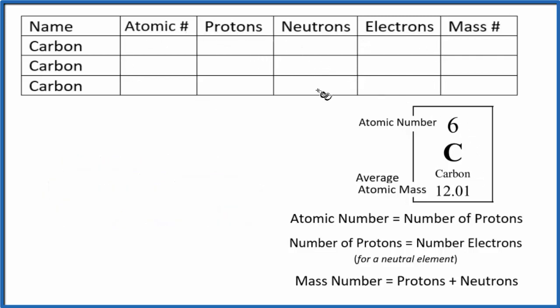So carbon has three primary isotopes. We'll talk more about isotopes later. But we know for carbon that carbon has an atomic number of six. So carbon, it doesn't matter what isotope it is, carbon always has an atomic number of six. That's what identifies carbon as carbon.